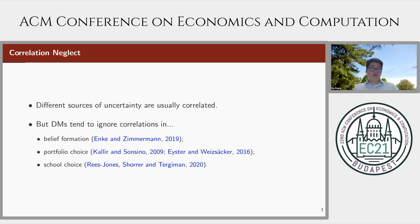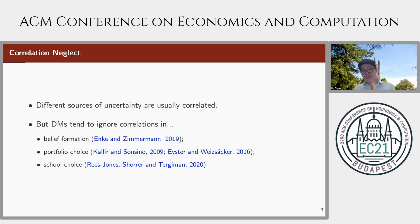Now we talk about the second heuristic, correlation neglect. In the real world, different sources of uncertainty are usually correlated, like the prices of different assets. However, decision makers have been found to ignore such correlations in different economic problems, like belief formation, portfolio choice, and school choice problems.